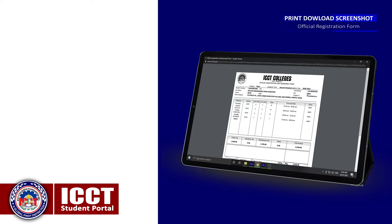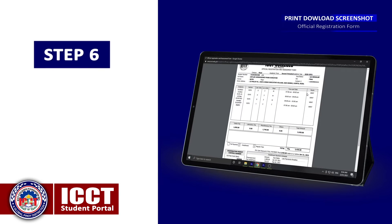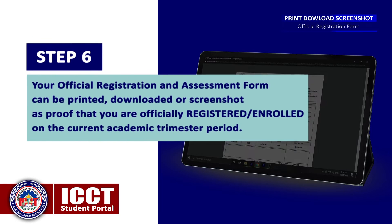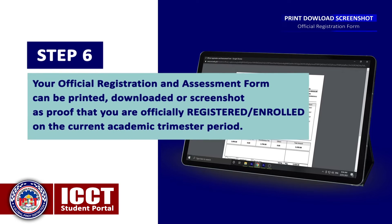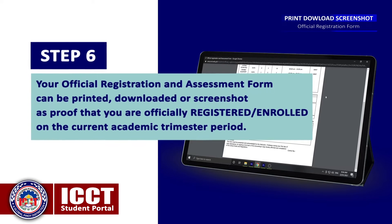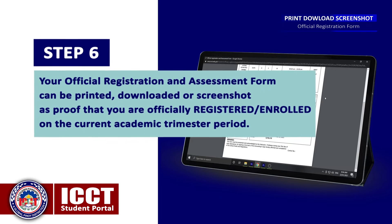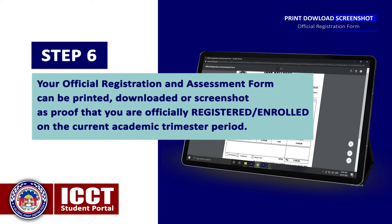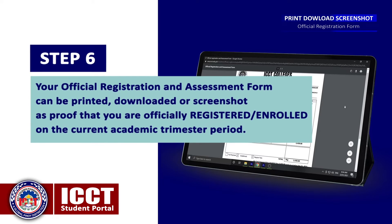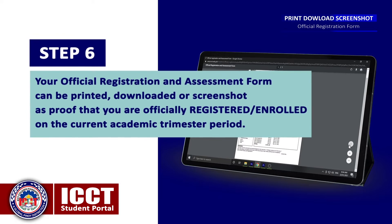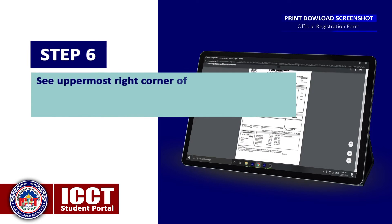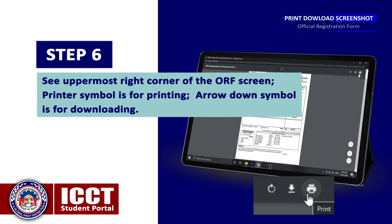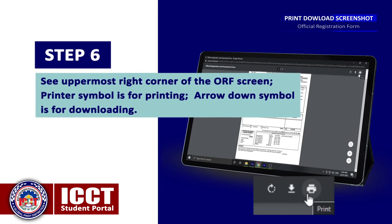Then click the Official Registration and Assessment Form button. Step 6: Your official registration and assessment form can be printed, downloaded, or screenshot as proof that you are officially registered for the current academic trimester period.